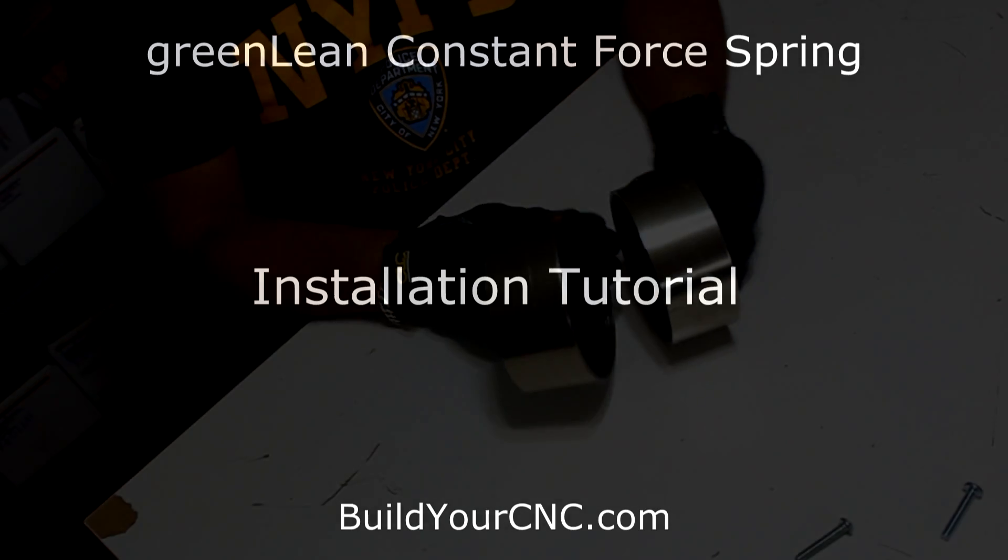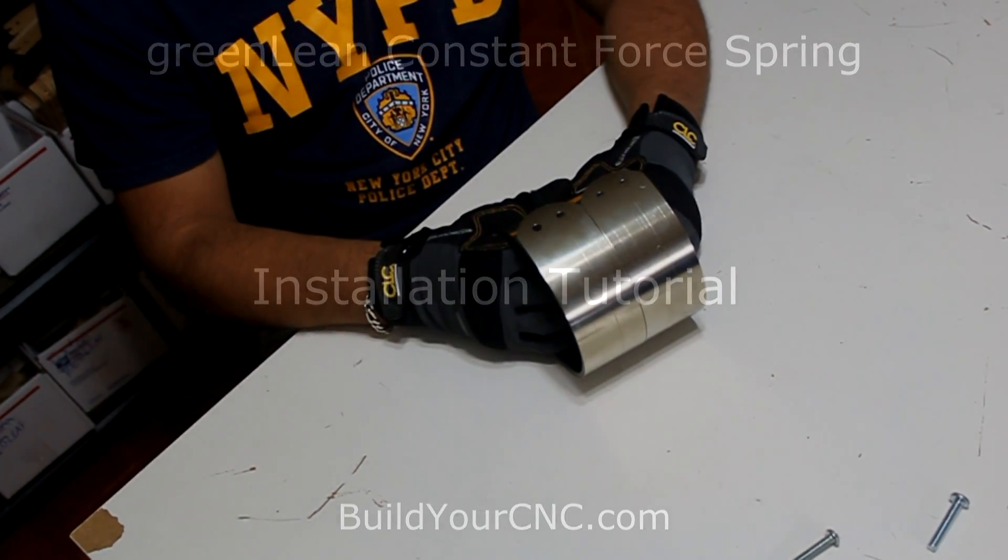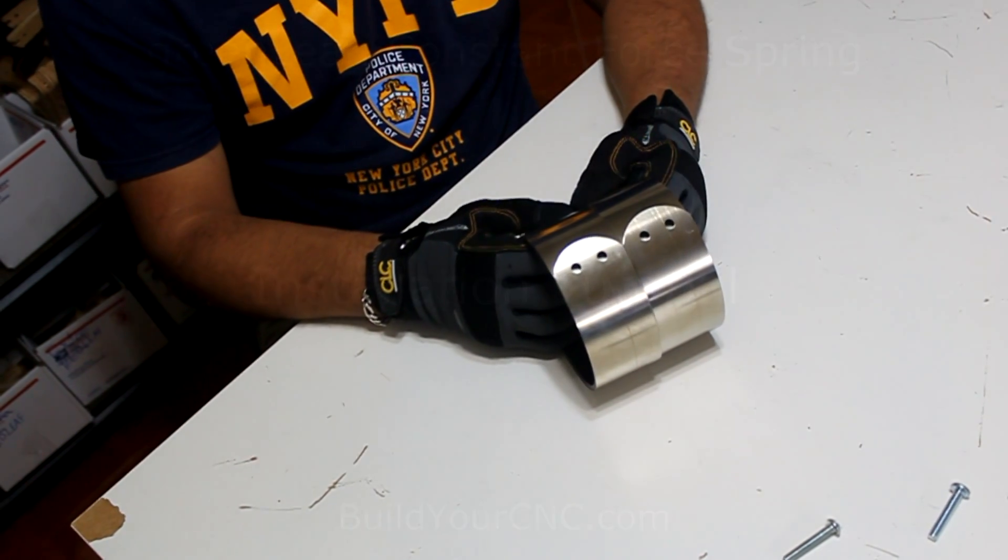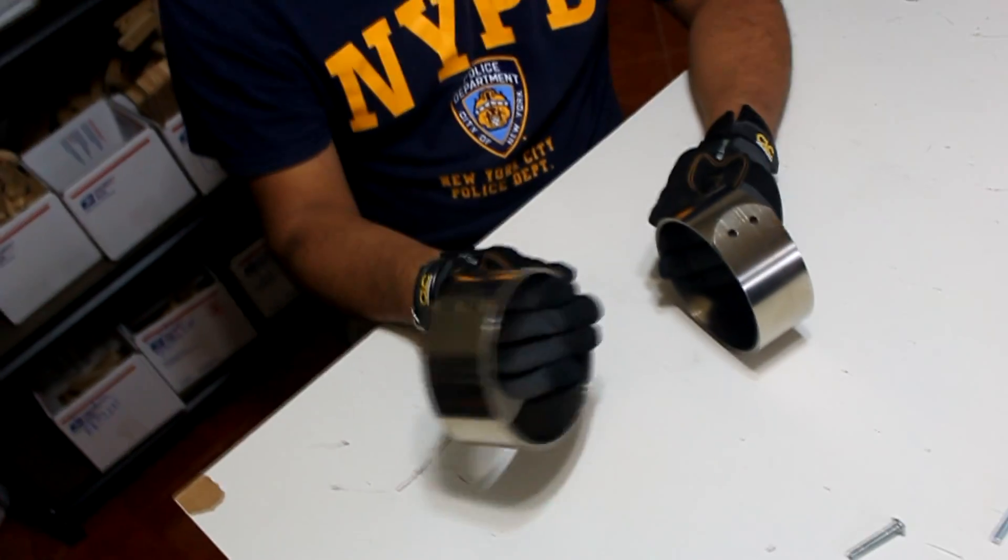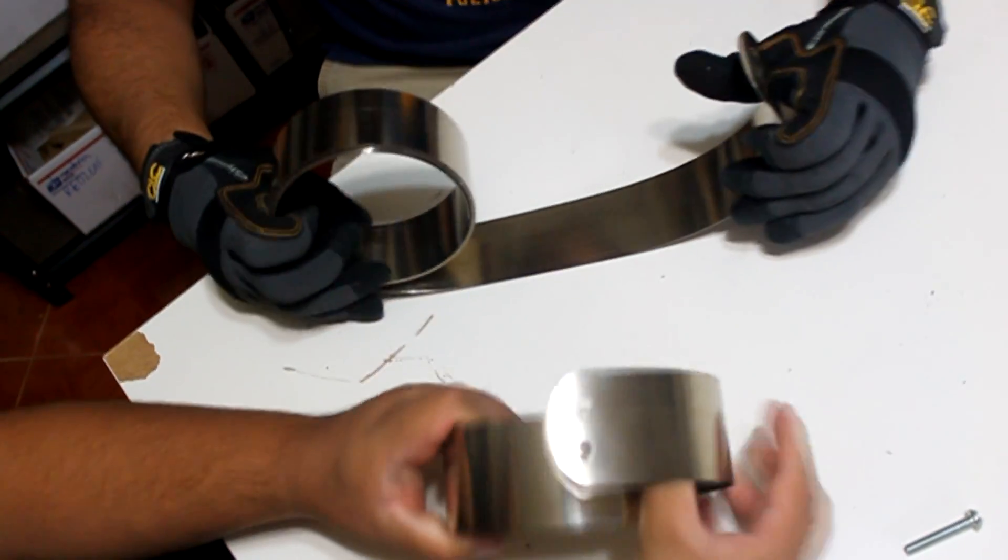In this video we will demonstrate how to coil the two constant force springs for the Greenlean CNC machine. You will need two people to do this operation. Remember to wear appropriate safety gear and use caution.